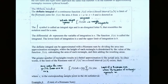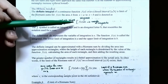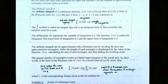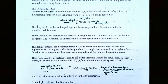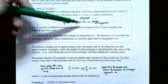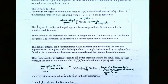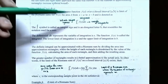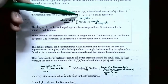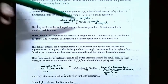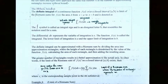The definite integral of the continuous function f of x over a closed interval x equals a to x equals b is a limit of a Riemann sum for the function. The area from x equals a to x equals b is denoted with the integral symbol, the function f of x dx — f of x is called the integrand, and dx tells you the variable of integration is x. What's different from the indefinite integral is the numbers on the integral sign: x equals a is the lower limit and x equals b is the upper limit of integration.